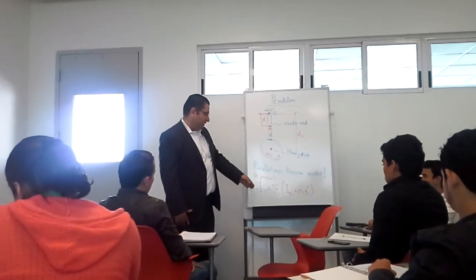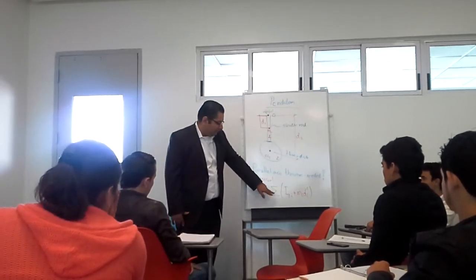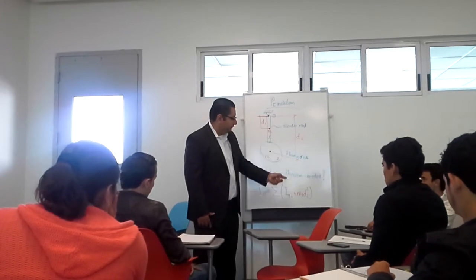In general form, the parallel axis theorem looks like this: it's the summation of the parallel axis theorem for each of the bodies.